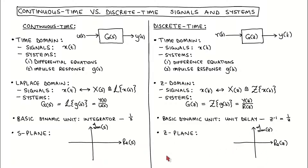In conclusion, we can see that there are several similarities between modeling discrete time and continuous time signals and systems, and we can exploit this fact to improve our understanding of discrete time signals and systems. However, there are a few significant differences, and one should be careful not to assume similarities when there are none.